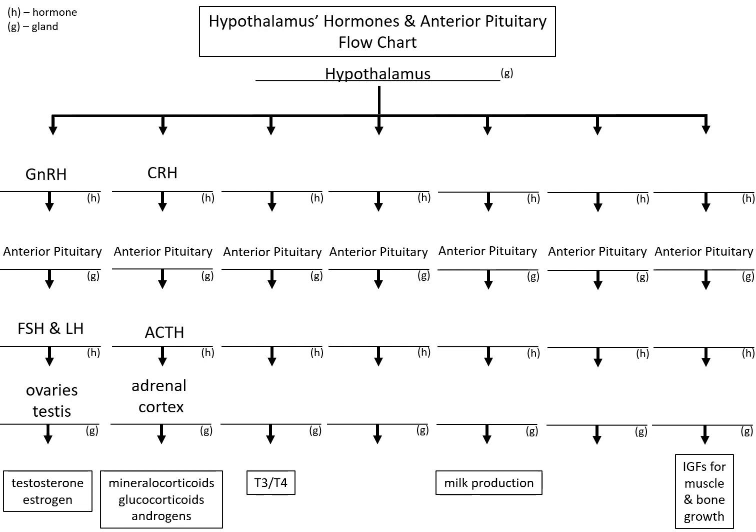Here we're looking at the goal of releasing T3 and T4. We know T3 and T4 come from the thyroid gland, and the thyroid receives a message from the anterior pituitary via thyroid stimulating hormone. So what is released from the hypothalamus to tell the anterior pituitary to release TSH? That's going to be thyrotropin releasing hormone. So we've got three releasing hormones so far: gonadotropin releasing hormone, corticotropin releasing hormone, and thyrotropin releasing hormone.